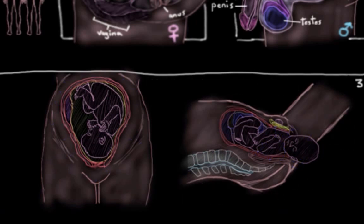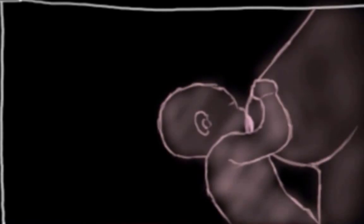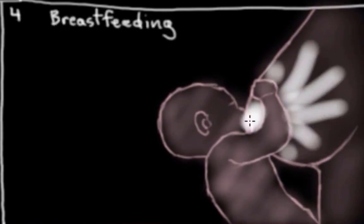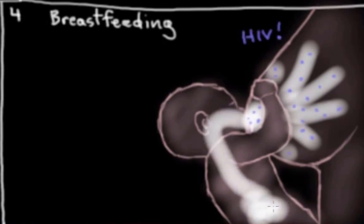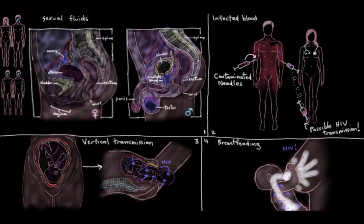The last route involves mom and baby as well — transmission of HIV via breastfeeding. Breast milk in an infected mom will contain HIV particles, so when the baby feeds, it'll be ingesting lots of HIV particles. It's not entirely clear how HIV gets into the breast milk in the first place, but when the baby ingests it, it can infect the baby by being absorbed through the digestive tract.